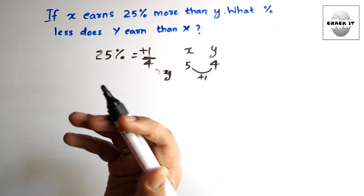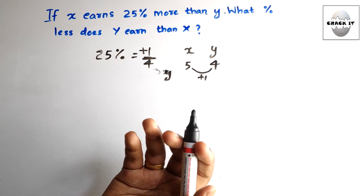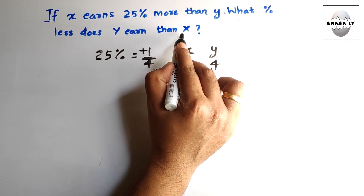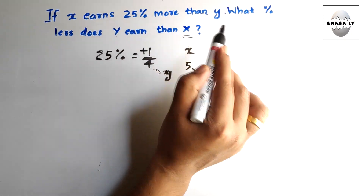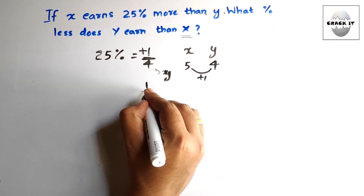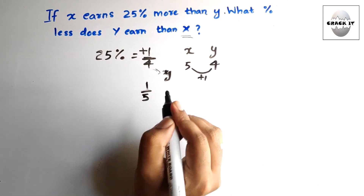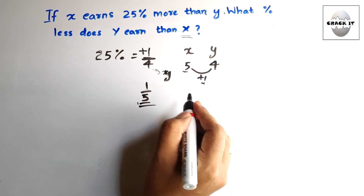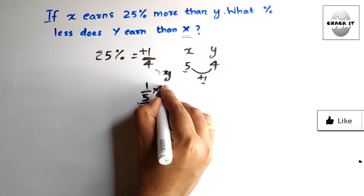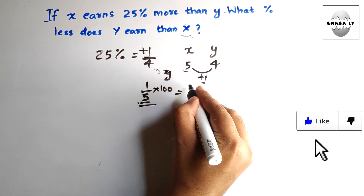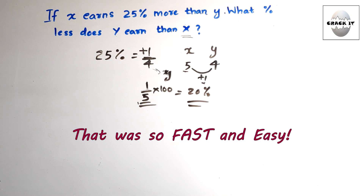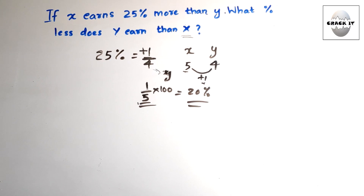Since the question asks 'less than X', the denominator will be X. So it will be 1/5. The answer will be 1/5 × 100 = 20%. This is the answer. Now let's move on to the second question.